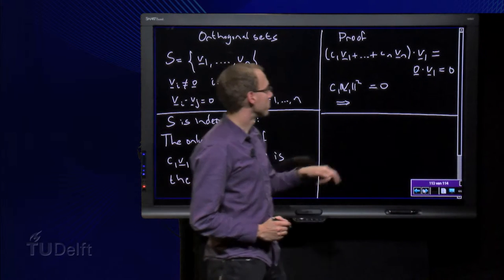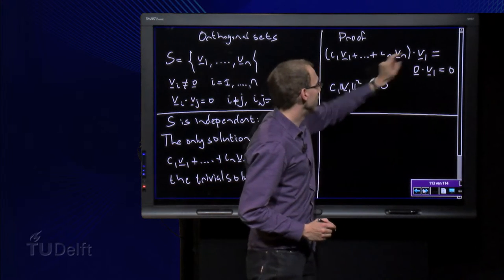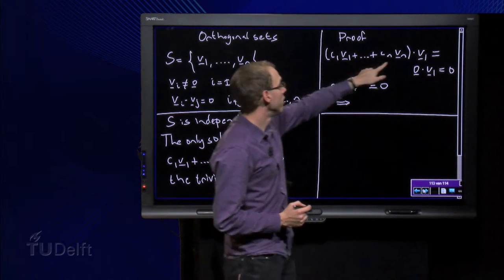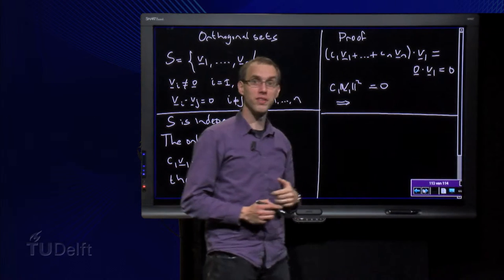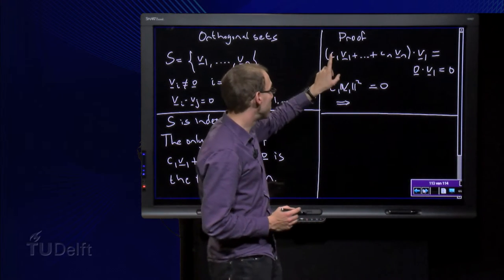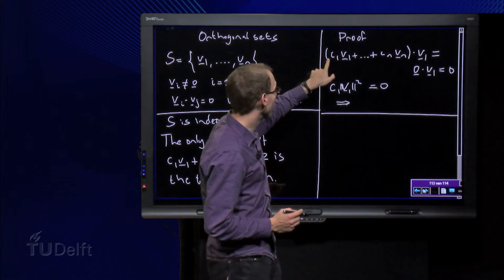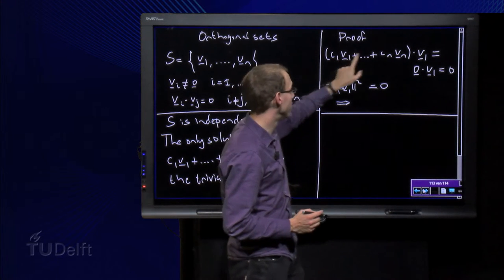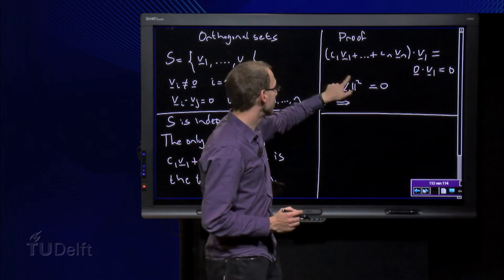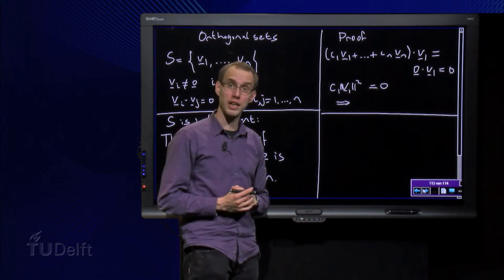But then take a look: V1 inner product Vn equals zero because they are orthogonal to each other, V1 inner product with Vn minus 1 equals zero, so all of them are zero except for the first one where we have C1 times V1 inner product V1, so C1 times length of V1 squared equals zero.